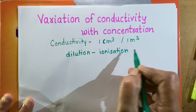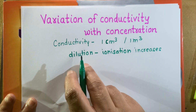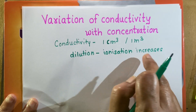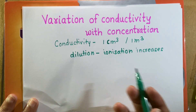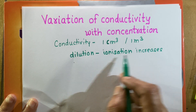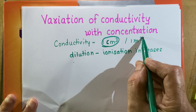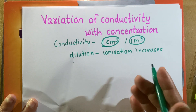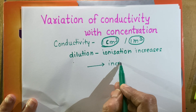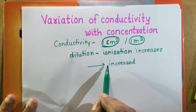Ionization increases with dilution. If you increase the volume of the solution, its degree of ionization increases — meaning, number of ions produced by that electrolyte will increase. If we dilute the solution, means if we add water into the solution, the ionization of the electrolyte will increase. So the number of ions present in 1 cm³ of the solution will increase. So what will happen to the conductivity? The conductivity of the solution must increase when you dilute the solution.